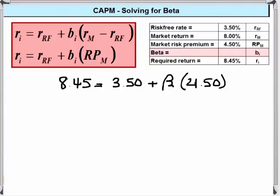We need to solve for beta, so we need to isolate it. Get it on one side, get everything else on the other. So the first thing we want to do is subtract 3.5 from both sides.